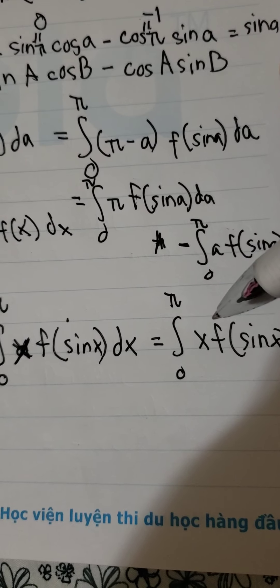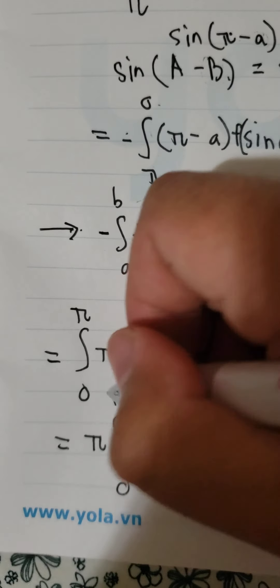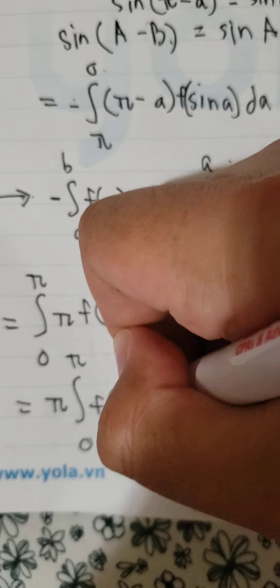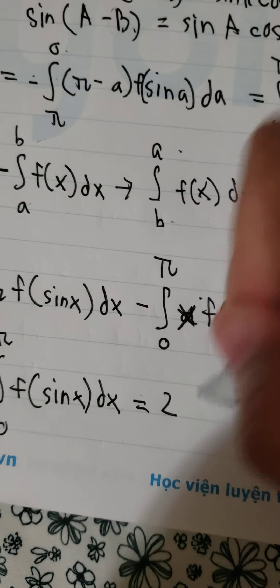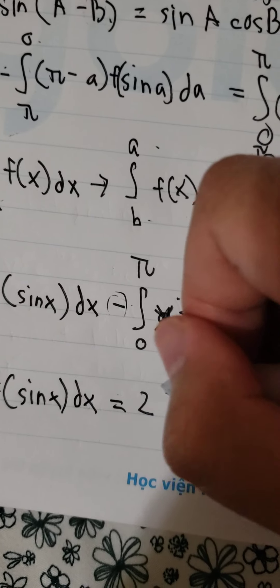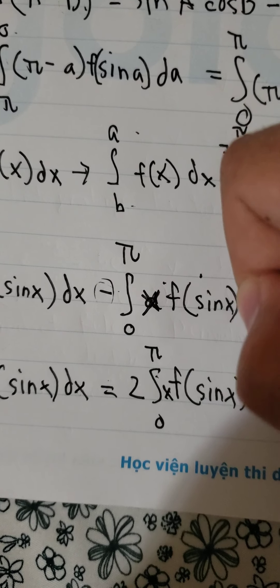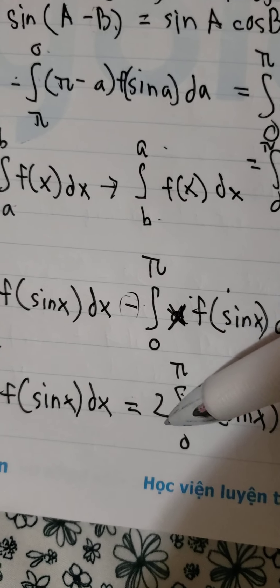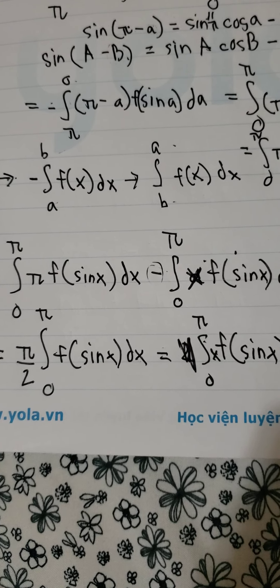We know that this one equals this one. Putting this equation together and moving this term to the right, this one plus this one gives us a factor of 2, because the negative becomes positive when we move it across. Now we have 2 on this side. We divide both sides by 2, and that is the end result. Thank you for watching.